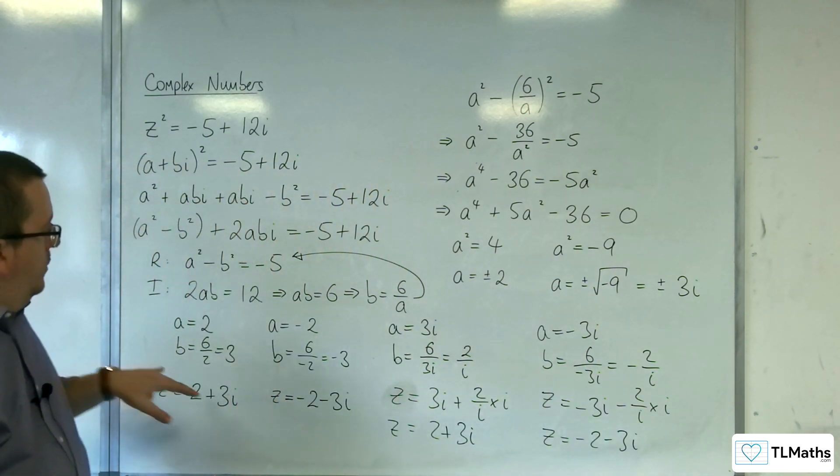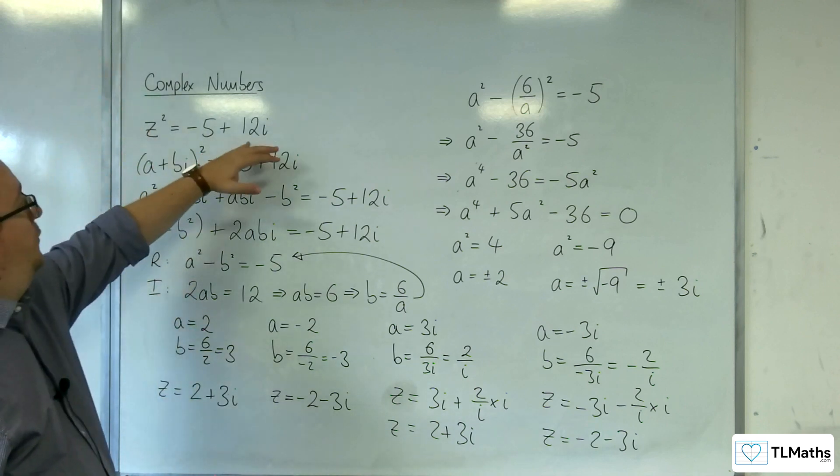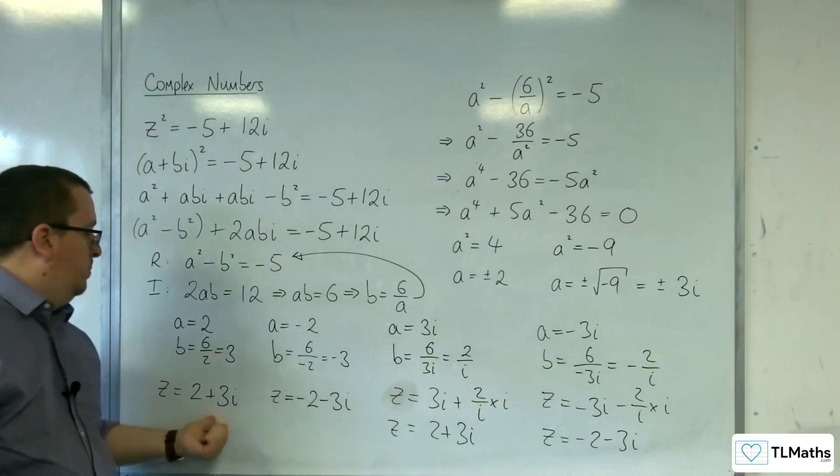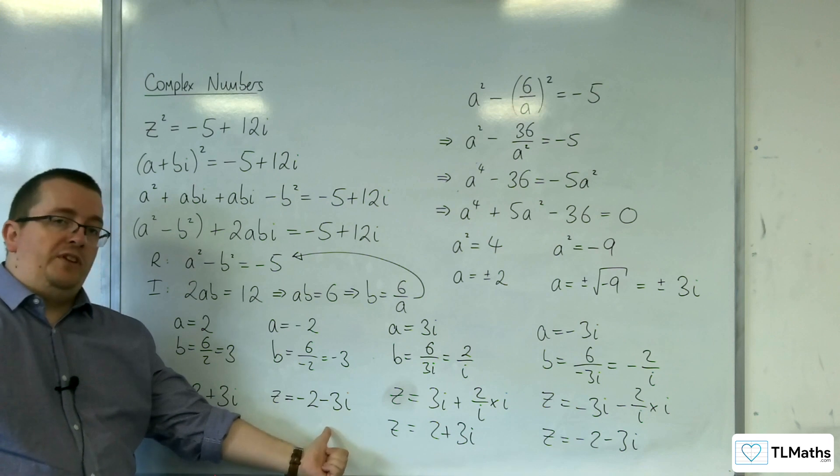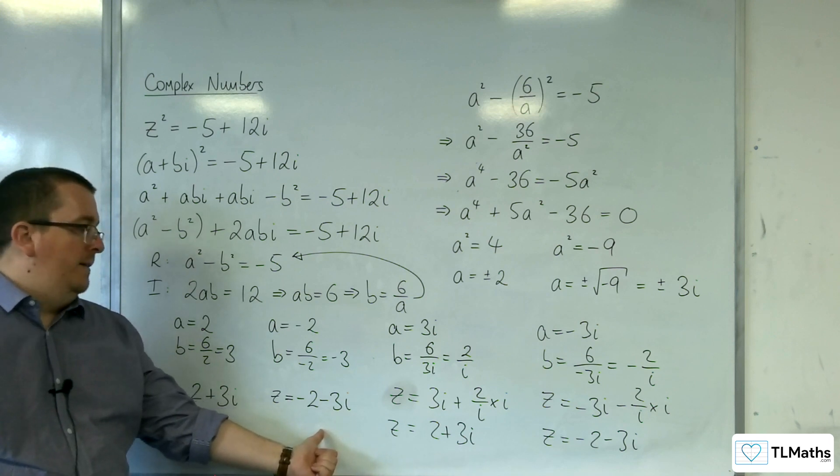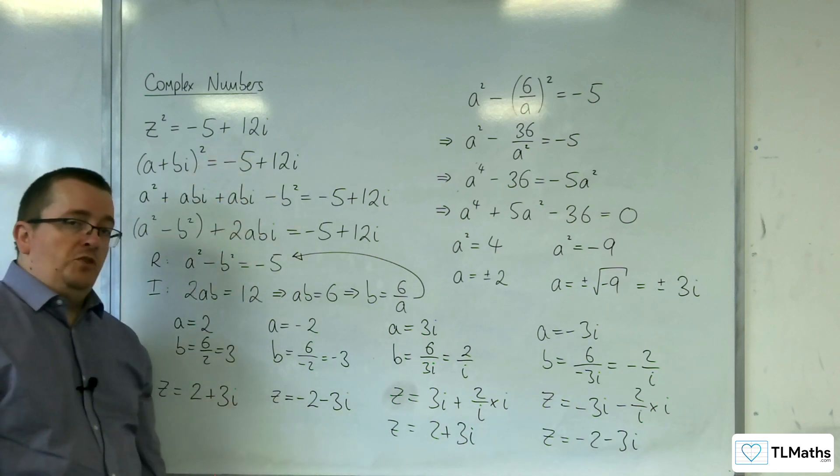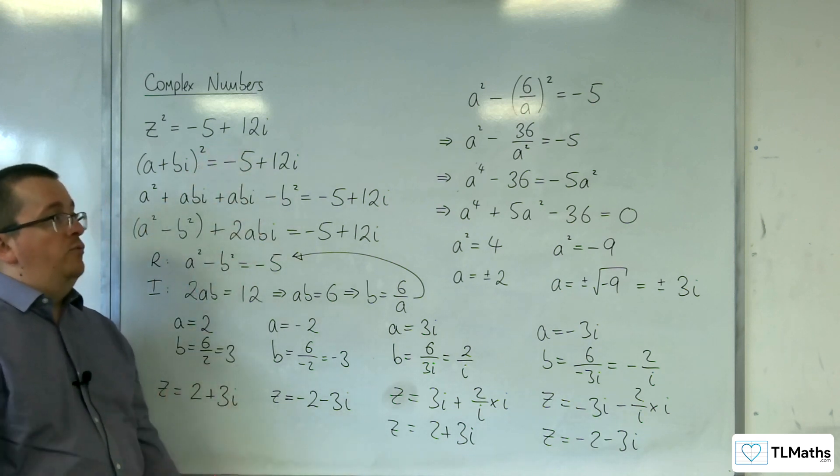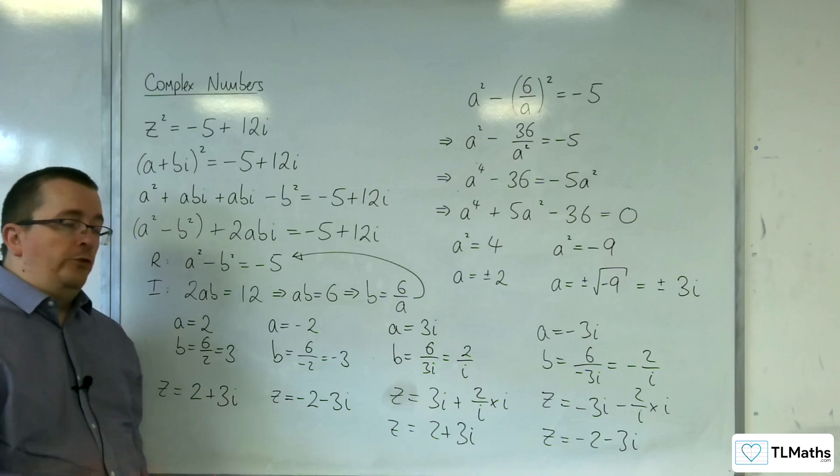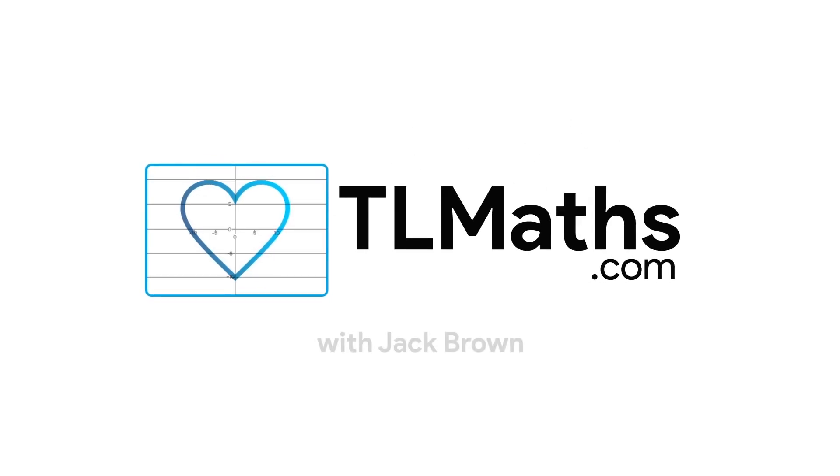So, the square root of -5+12i is either 2+3i or -2 take away 3i. Both of these, if you square them, will get you back to -5+12i. And that's the algebraic process that you go through in order to square root a complex number.